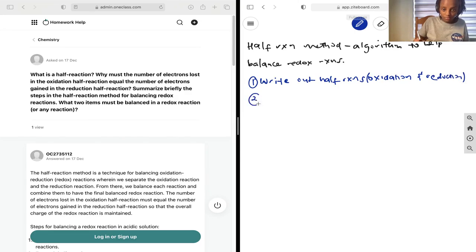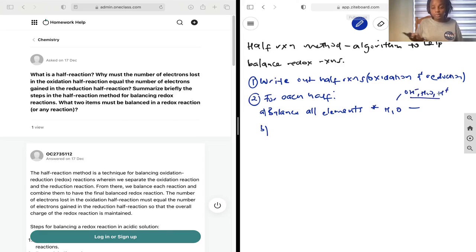Step two is: for each half, a) balance all elements with the exception of hydrogen and oxygen, because we'll balance them later. These two involve OH minus, H2O and H plus to balance, and that involves charge, which we're not going to touch yet.